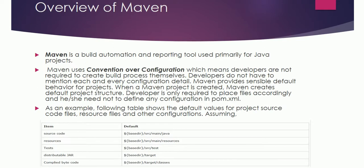Maven is a build automation and reporting tool used primarily for Java projects. It is a build automation tool through which you can build the code. There are many build tools available, but Maven is very popular and is specially used for Java projects.